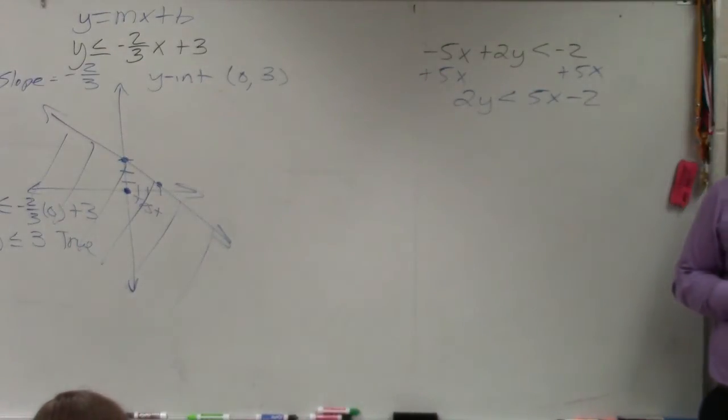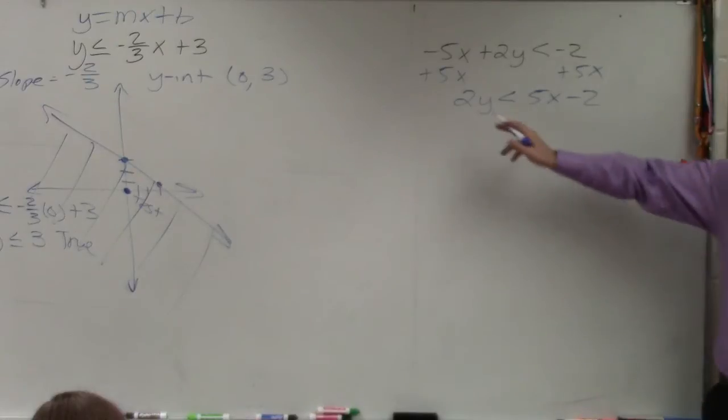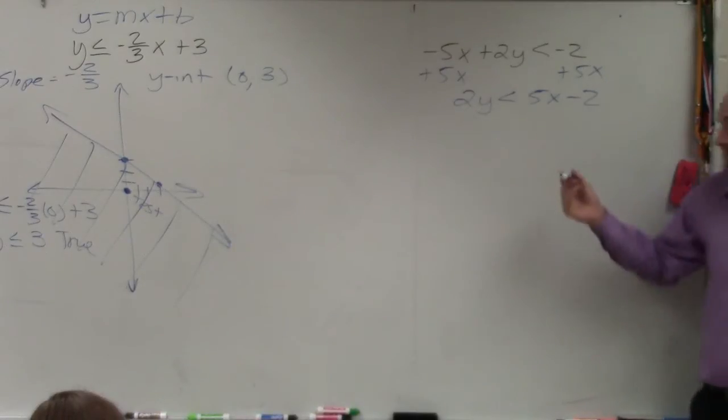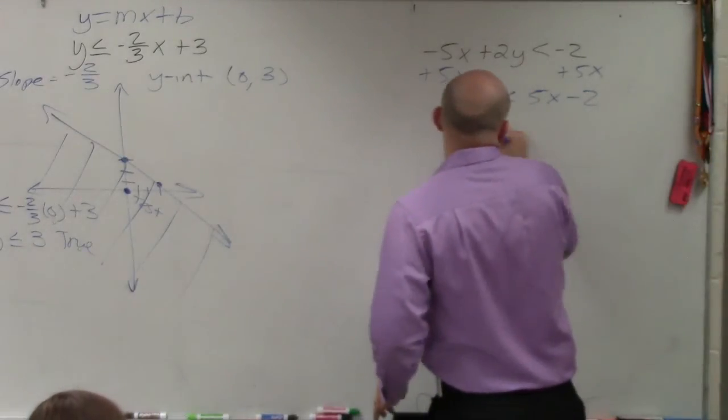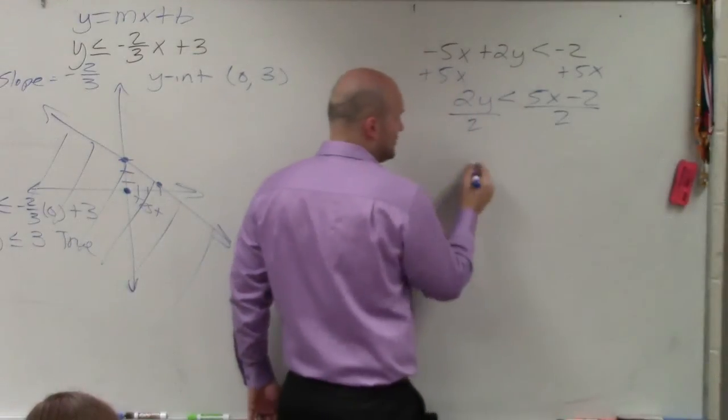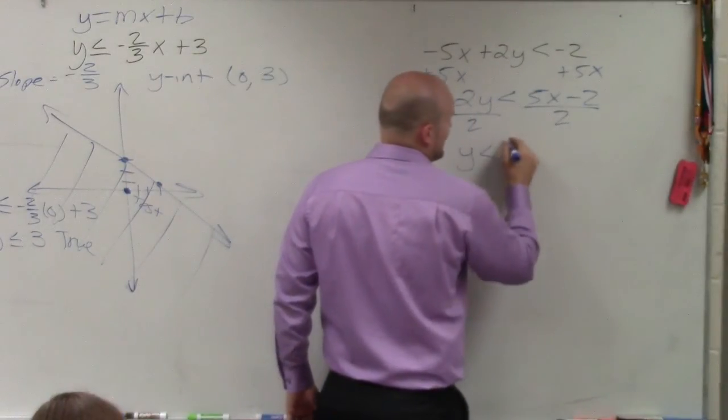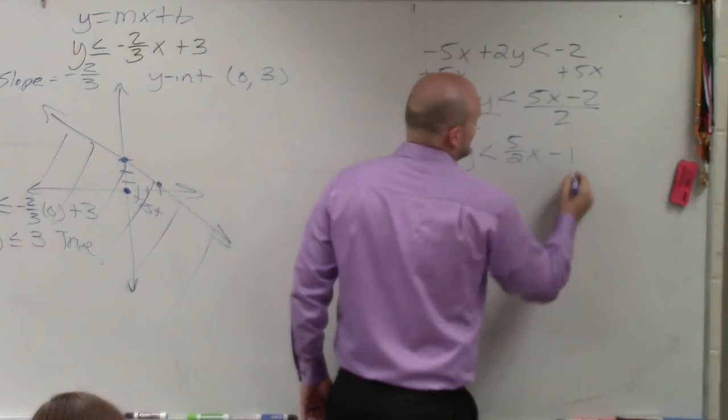Has everybody found me? Yes. OK. Now I need to divide by 2. So I divide by 2. Remember that 2 has to divide into both of those, so I'm left with y is less than 5-halves x minus 1.